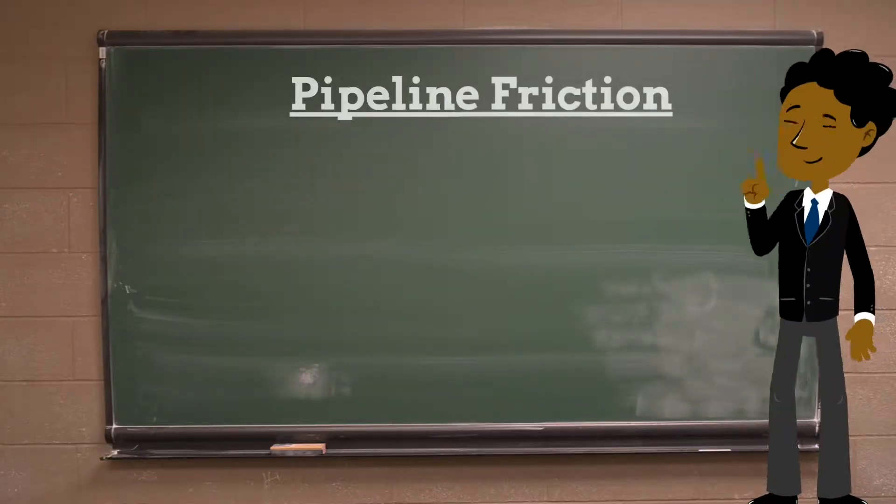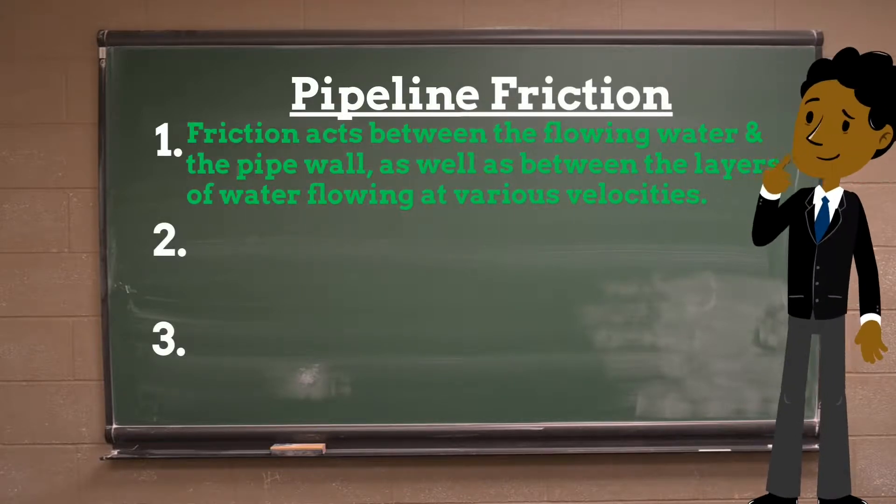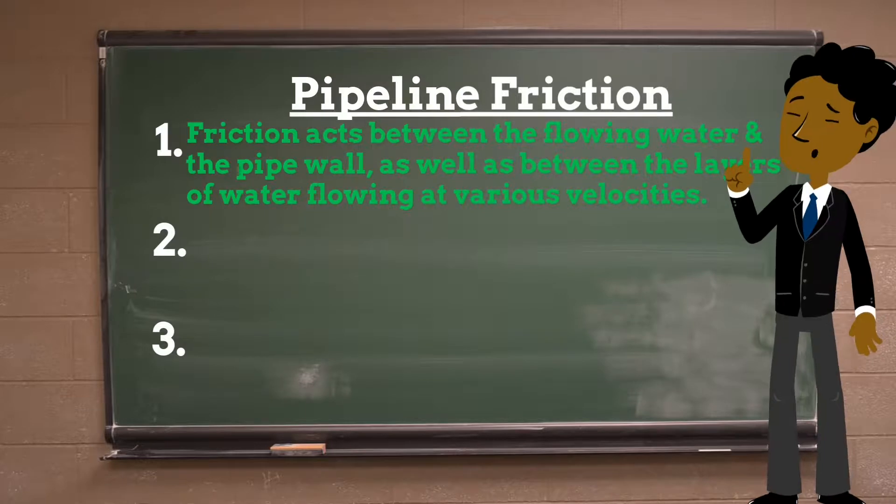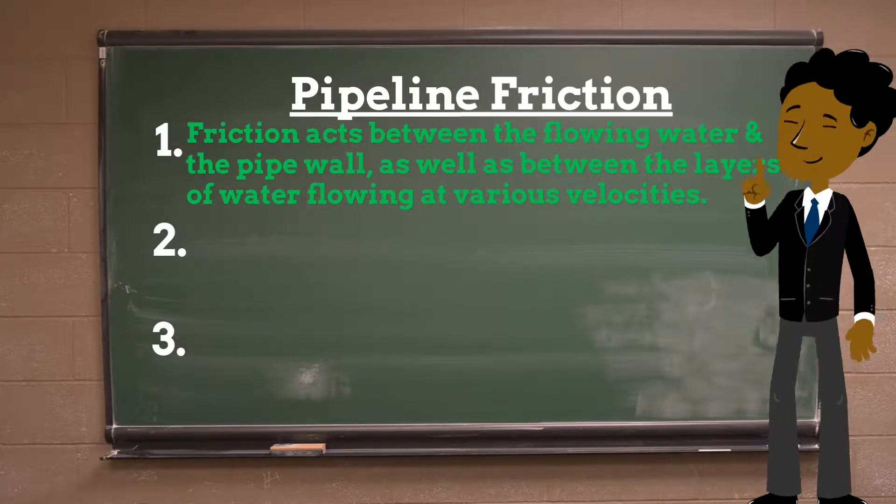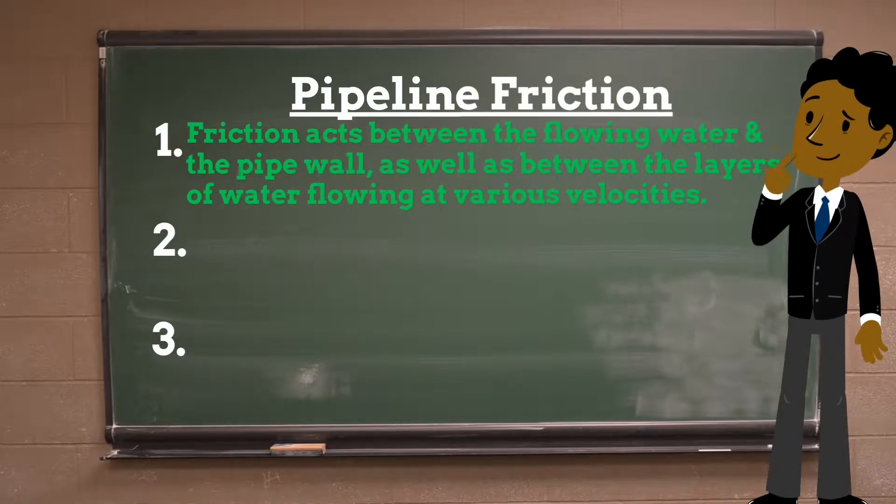Today we will discuss pipeline friction. When water flows in a pipeline, there is friction acting between the flowing water and the pipe wall and between the layers of water moving at different velocities in the pipe. This is because of the viscosity of the water.